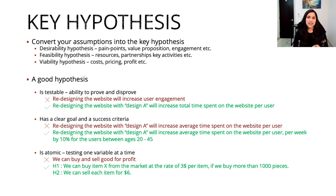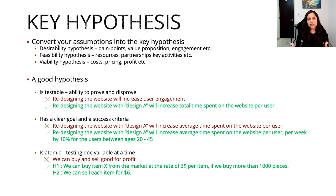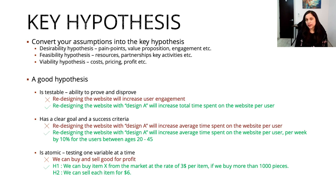The second characteristic of a good hypothesis is that it has a clear goal and success criteria. For example: 'redesigning the website with design A will increase average time spent on the website per user per week by 10% for users between ages 20 and 45.' This is a very good hypothesis — you know which customer segment you're working with, which design you'll use, which metric you'll focus on, and how much you need to move that metric to succeed. The third characteristic is that your hypothesis must be atomic — have one cause and effect in a single hypothesis. Don't mix multiple variables, as that won't give you clear results.